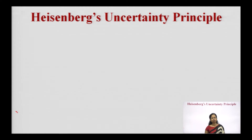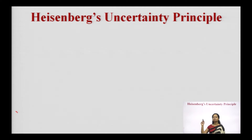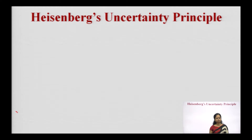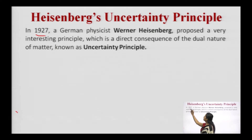Now let us understand the second concept: the Heisenberg uncertainty principle. Reading the heading carefully, there are three terms — Heisenberg, uncertainty, and principle. The term uncertainty is very important: uncertainty means nothing can be predicted accurately. This principle was given by the German scientist Heisenberg.